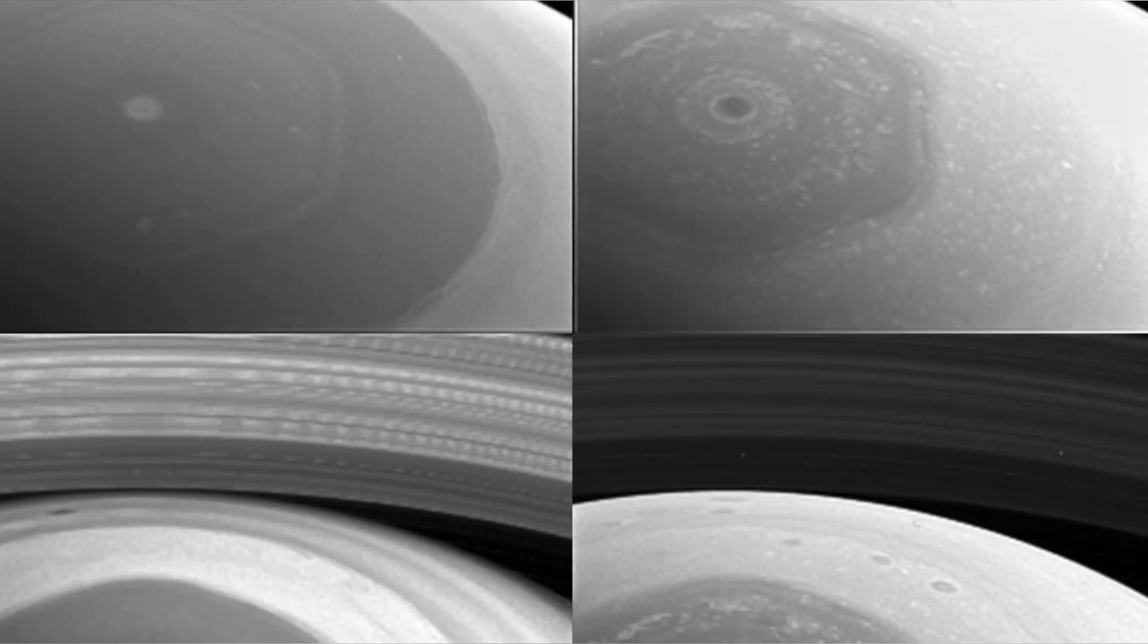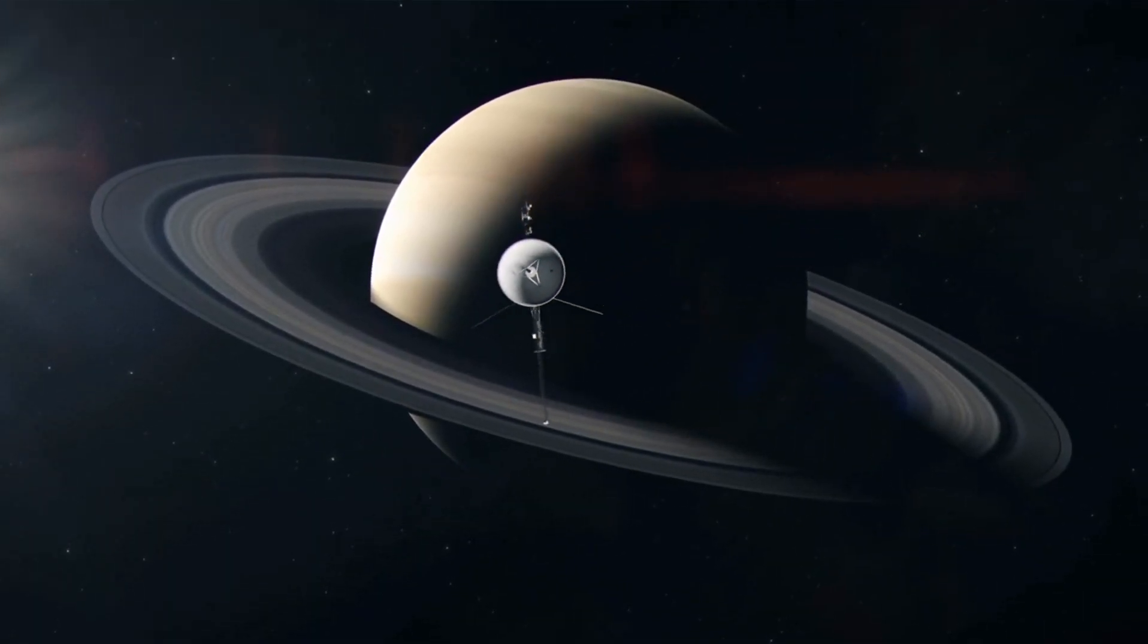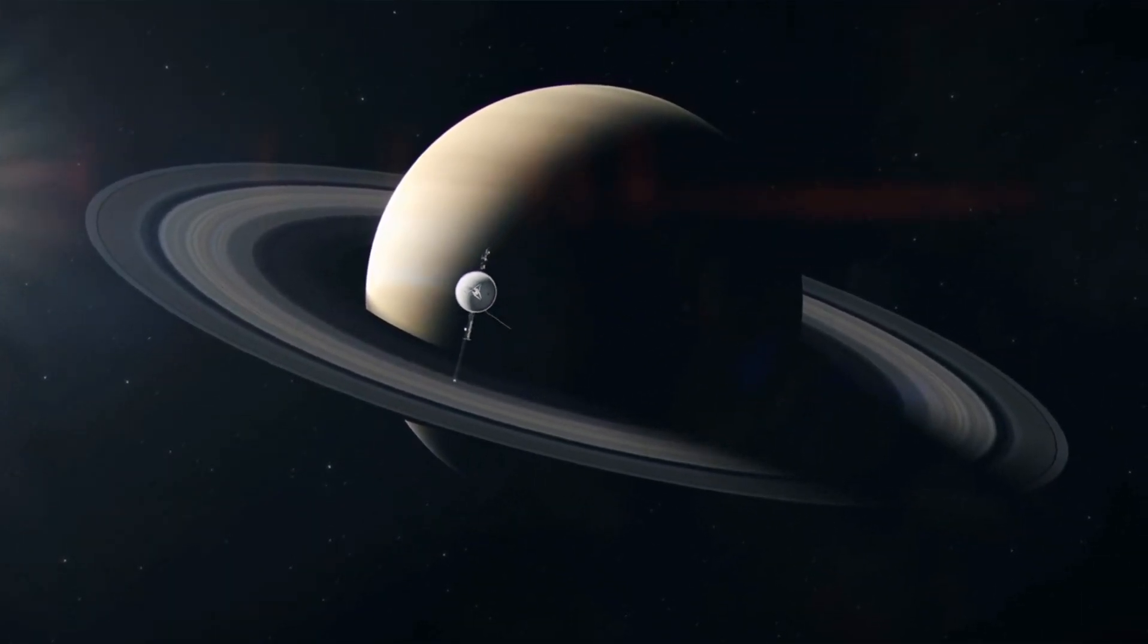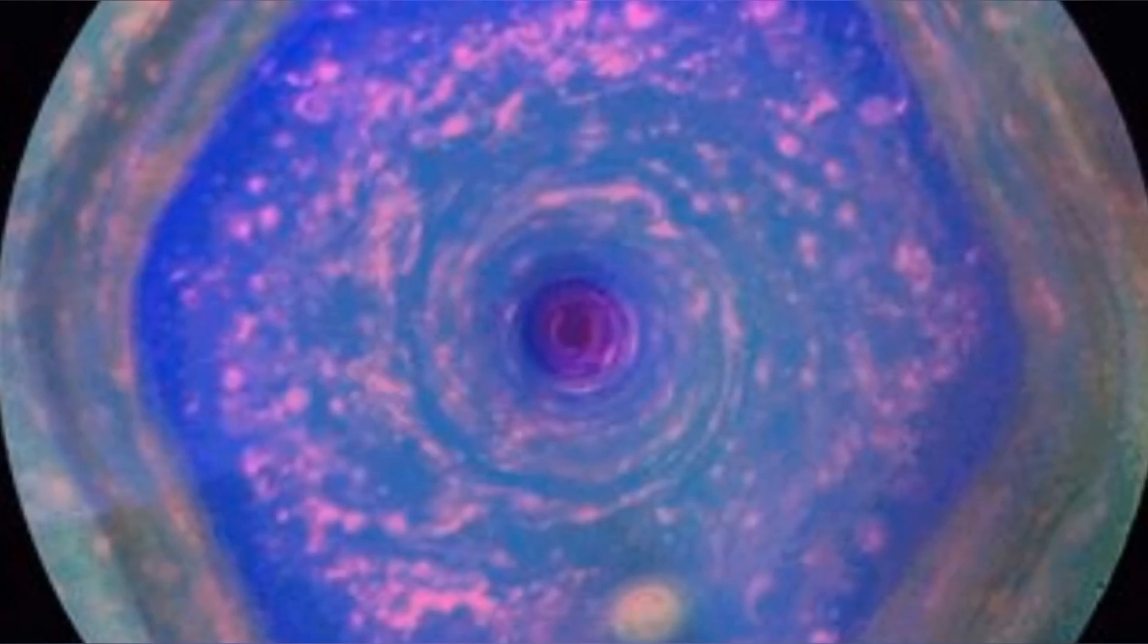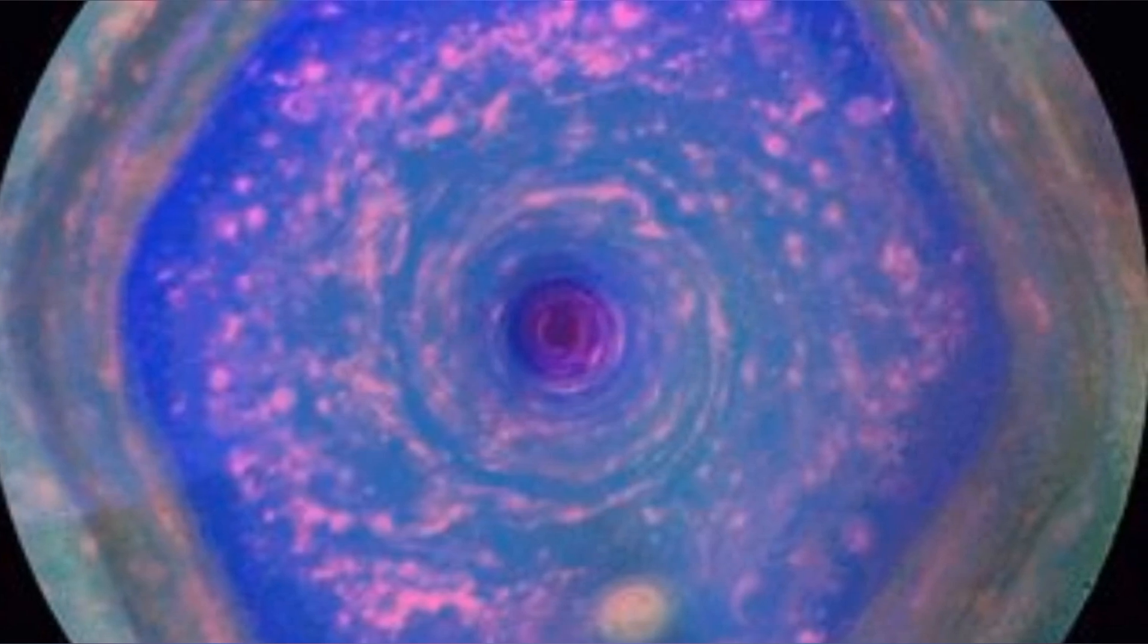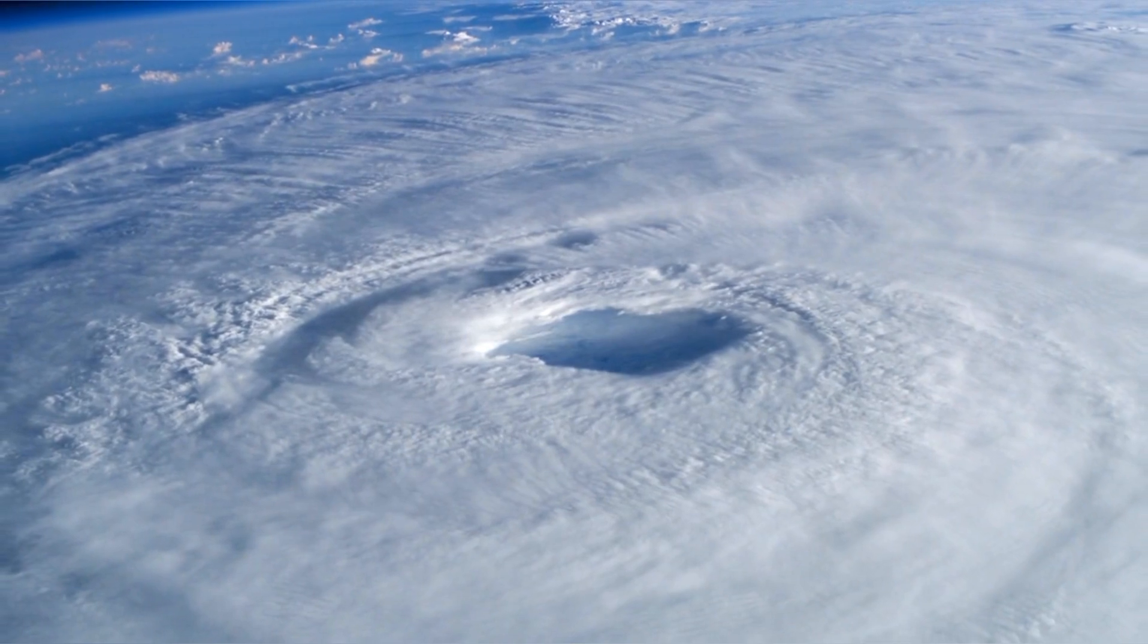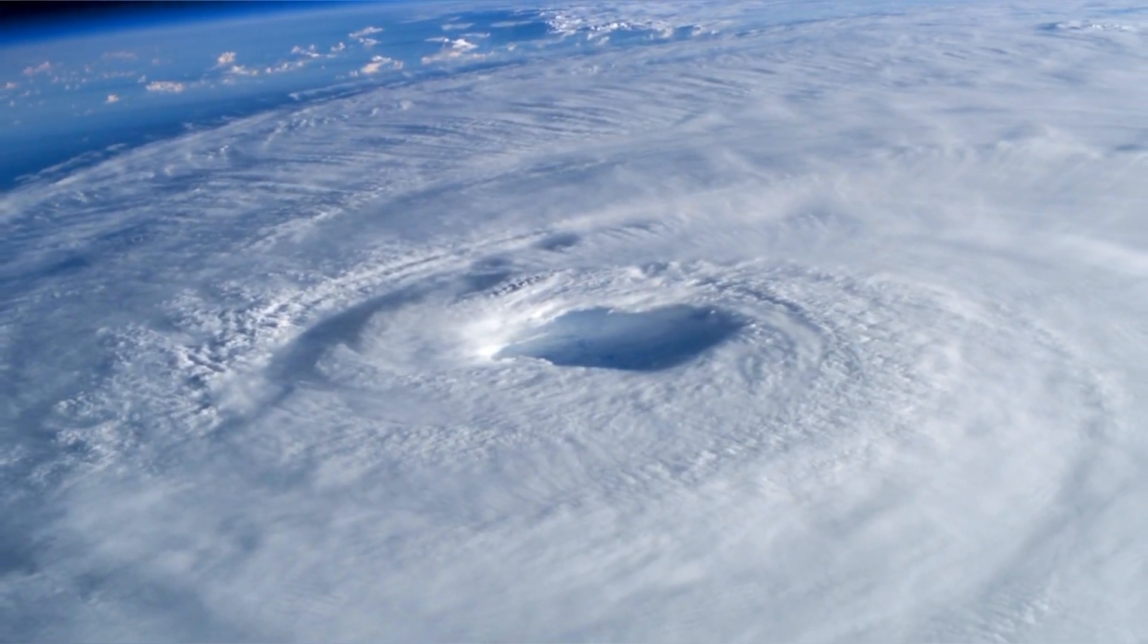Saturn's Hexagonal Storm: One of the most intriguing discoveries made by Cassini was Saturn's hexagonal storm. This hexagonal storm, which spans about 20,000 miles in diameter, forms a distinctive six-sided pattern in Saturn's northern hemisphere. It is a massive hurricane at Saturn's pole, dwarfing Earth's largest hurricanes.